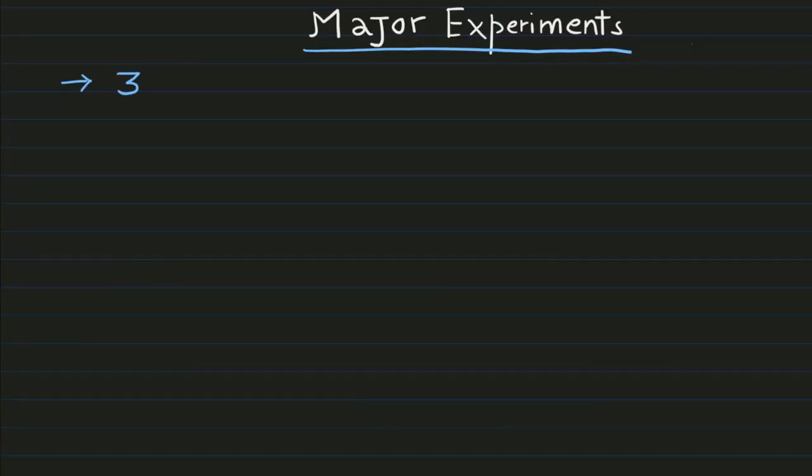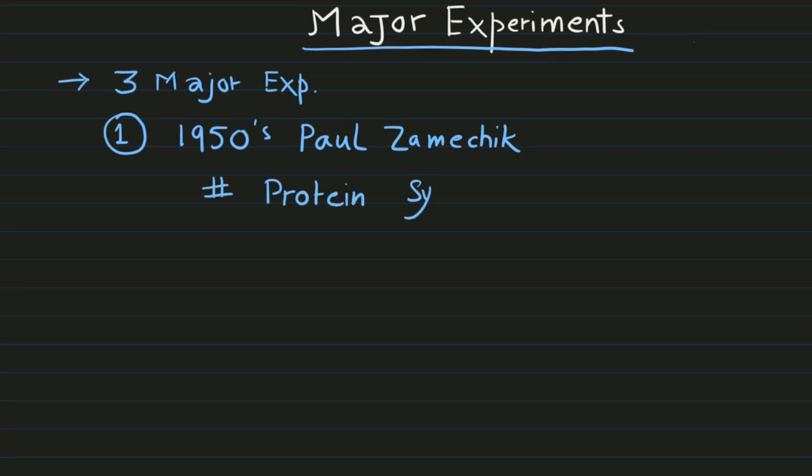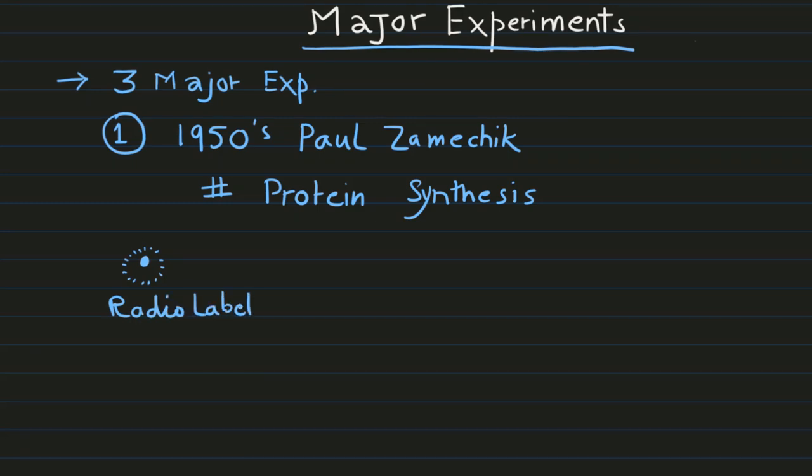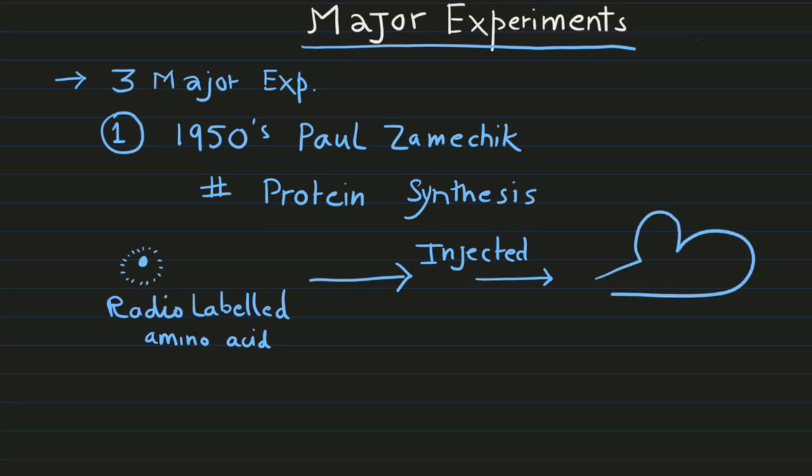There are three major experimental evidences that provide understanding of protein synthesis. First is the 1950s Paul Zemeck experiment where he studied protein synthesis using radio-labeled amino acids. He injected those amino acids inside an animal, a rat.